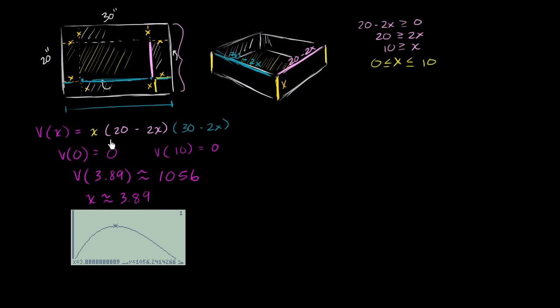So to do that, I'm going to have to figure out the critical points of our volume as a function of x. And to do that, I need to take the derivative of the volume. And before I even do that, it'll simplify things so I don't have to use some product rule and then have to simplify that. Let me just multiply this expression out.